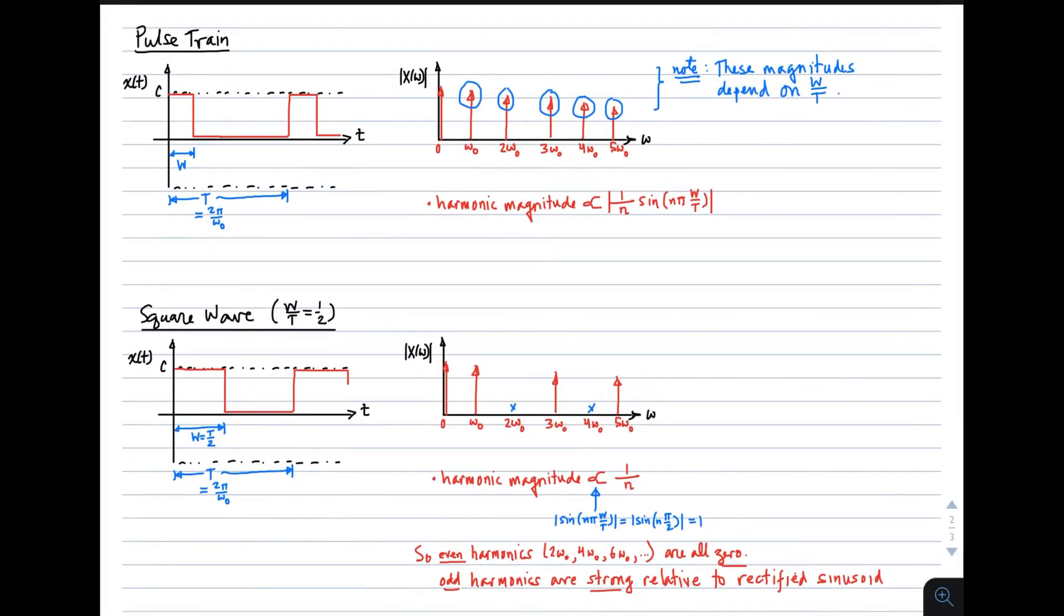The next waveform I'd like to consider is the pulse train. And a pulse train looks like this. It is either some non-zero value or at a zero value. And the fraction of time that it's at the non-zero value is quantified by w. So the duty cycle is w/T.